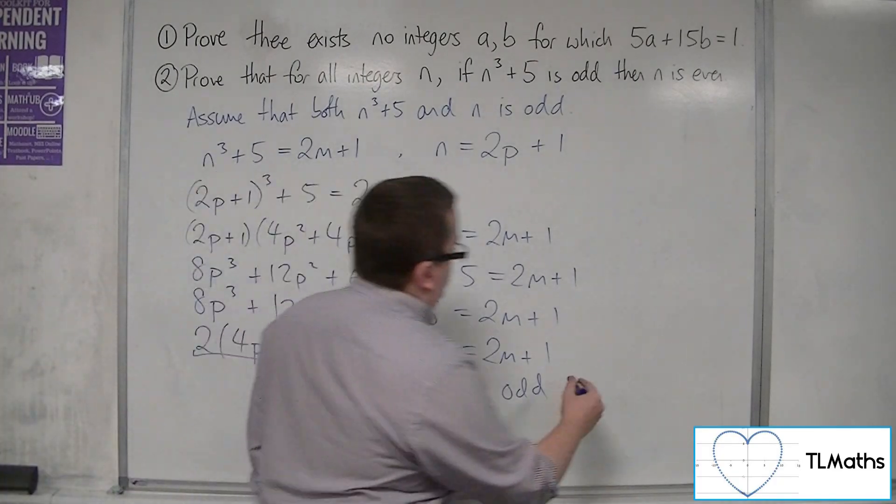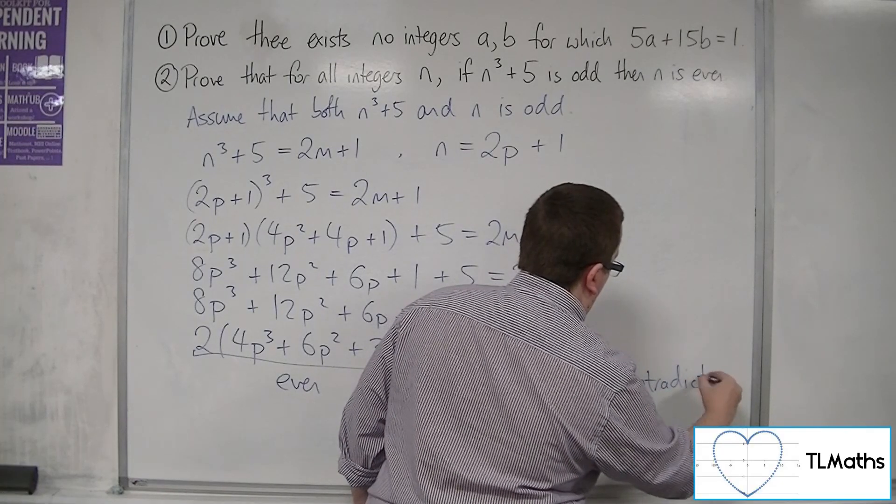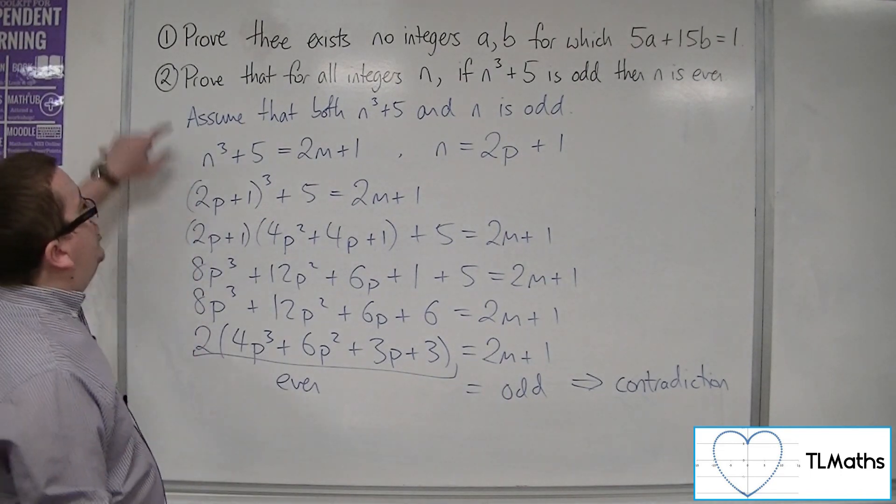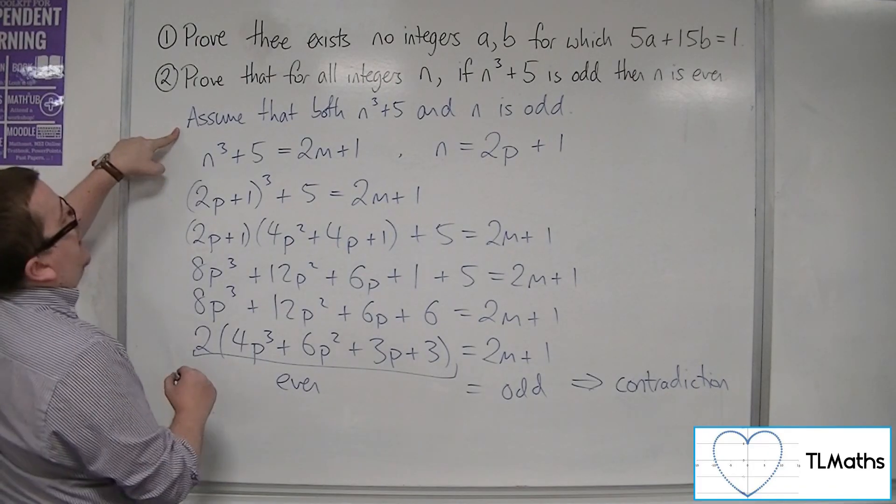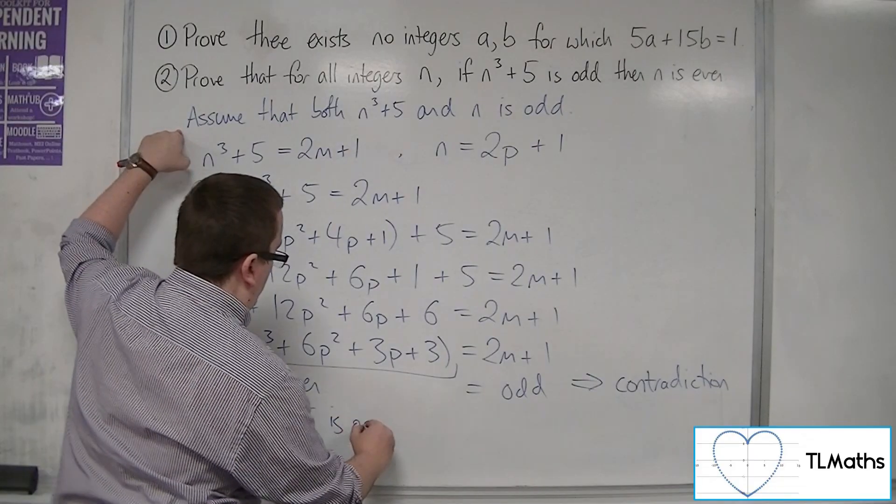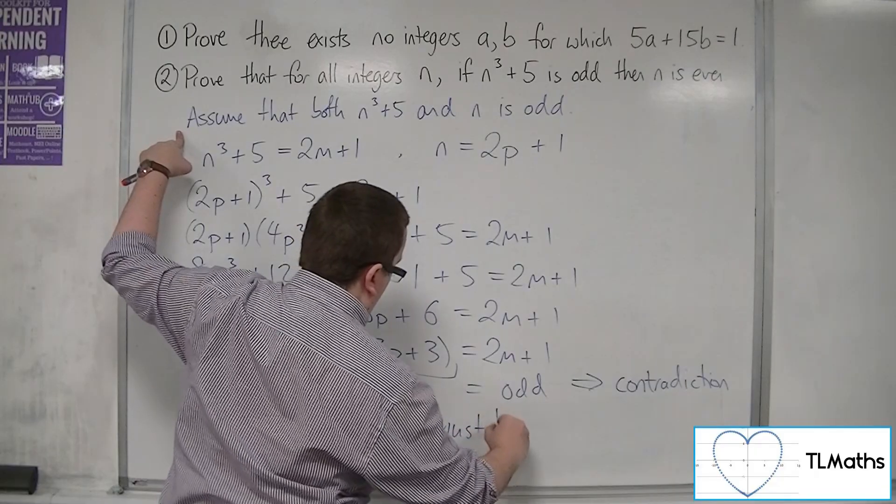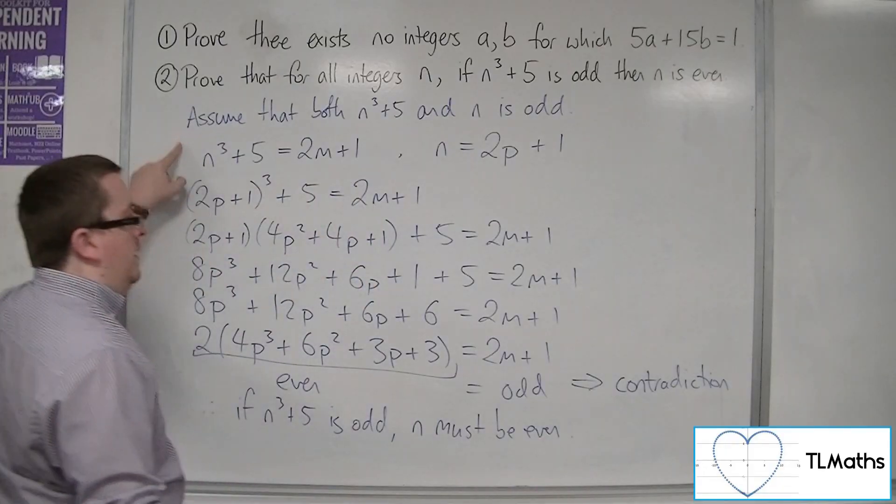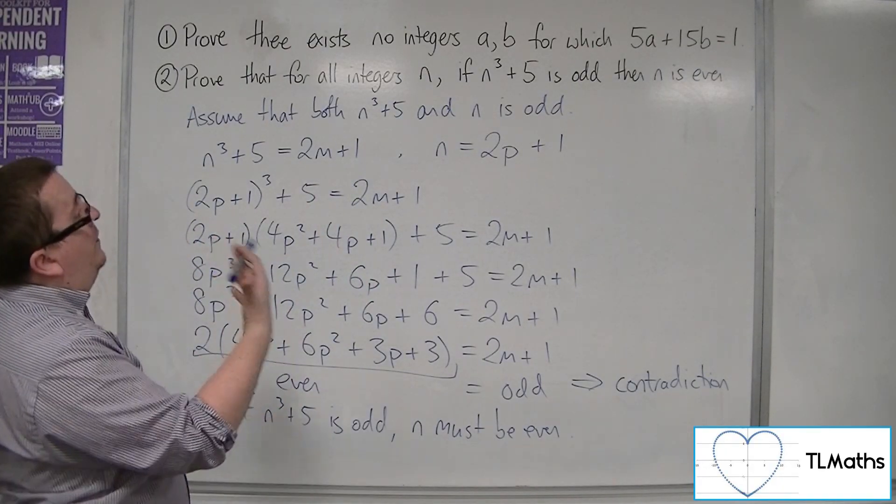So that is where our contradiction comes about. So because there is a contradiction here, our original assumption must be false. And so that would mean that if n cubed plus 5 is odd, n must be even. And that proves the original statement.